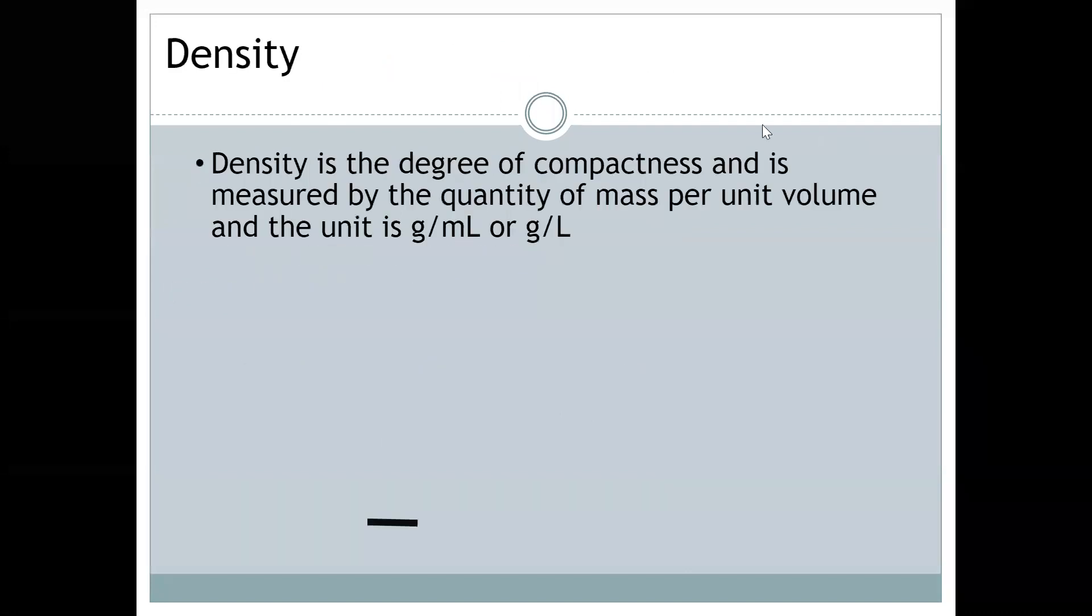Let's first talk about what density is. It is the degree of compactness, and it's measured by the quantity of mass per unit volume. The unit for it is grams per milliliter generally. You can also use grams per liter or even grams per centimeter cubed. There's a bunch of different ways to record it, but the metric one is going to be grams per milliliter most of the time.